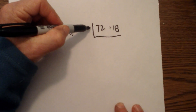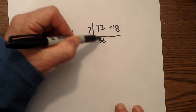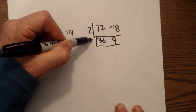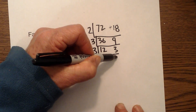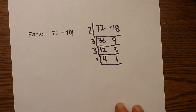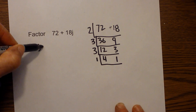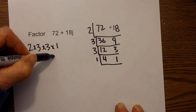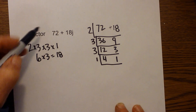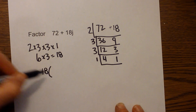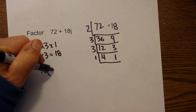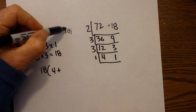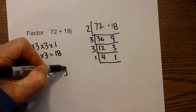Let's work one more example: 72 + 18j. I write 72 and 18 and draw a sled. 2 goes into 72 thirty-six times and into 18 nine times. Then 3 goes into both: 12 and 3. The GCF is 2 times 3 times 3 times 1, which equals 18. So I put 18 on the outside. 18 goes into 72 four times, and 18 goes into 18j one time, which is just j. So the factored expression is 18(4 + j).